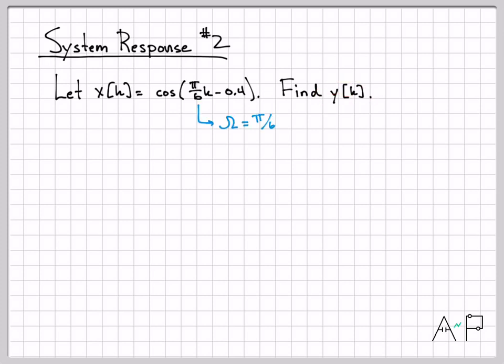So just looking at this, I can tell that the frequency is pi over six radians per sample. So that's the frequency we now need to query our frequency response. So let's go ahead and plug in to our frequency response equation. Let omega equals pi over six, then take the magnitude of this complex quantity.